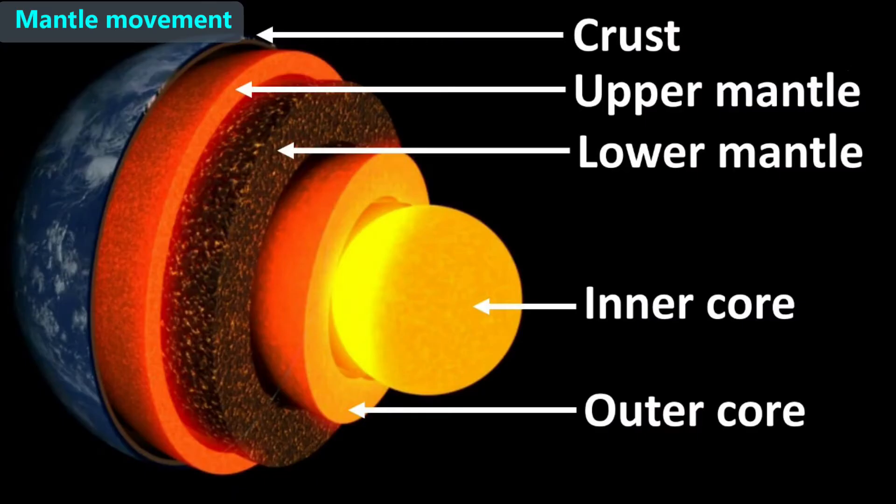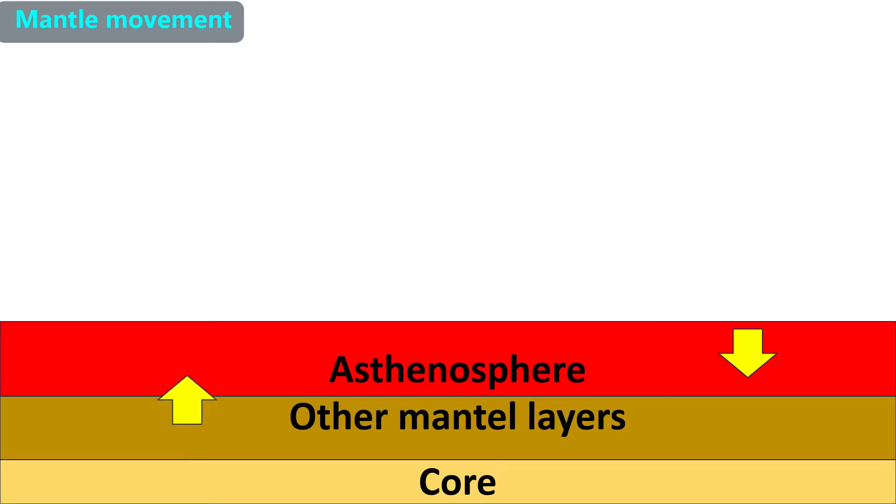All the mantle is made of solid rock. It can deform over the course of millions of years, so it flows. Because it flows, we consider it a fluid that is subjected to convection currents. In this simplified model, the upward moving arrow represents hot mantle rising. A downward arrow represents mantle falling.